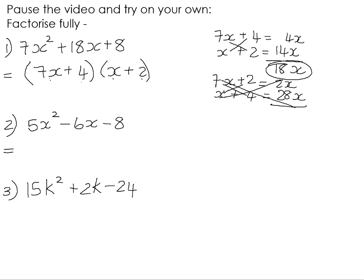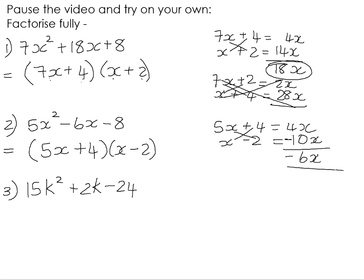Number 2, 5x squared minus 6x minus 8. The correct factors are 5x plus 4 and x minus 2. If you just want to check that your outers and your inners are correct there, we write them underneath each other. That's our outers times together, negative 10x because it's 5x times negative 2 and x times 4 is 4x. 4x subtract 10x is negative 6x.